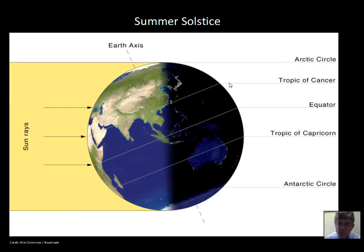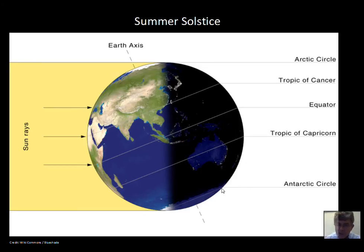The Arctic Circle is worth knowing — at 66.5 degrees latitude. The equator, of course, is 0 degrees latitude. And the Antarctic Circle is at minus 66.5 degrees.